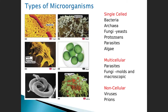With prions — anybody ever heard of a prion? Prions are infectious proteins. You might not know what a prion is, but you've heard of prion diseases. How many people have heard of mad cow disease? That's a prion disease — an infectious protein. Not only do we have to worry about cellular organisms, but also acellular things that can cause problems.